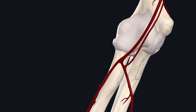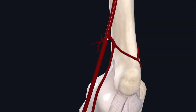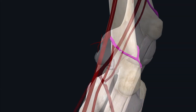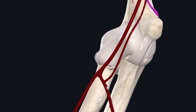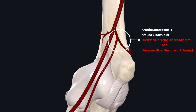The pronator teres muscle receives its arterial supply from two main arteries: the brachial artery and the ulnar artery. The brachial artery supplies the pronator teres muscle by giving off a small branch called the inferior ulnar collateral artery, while the ulnar artery supplies it via the anterior ulnar recurrent artery. These two branches — the anterior ulnar recurrent artery and the inferior ulnar collateral artery — form an anastomosis around the elbow joint.